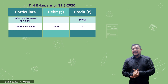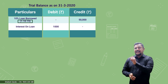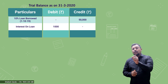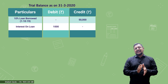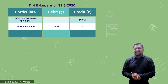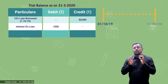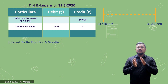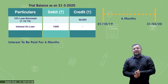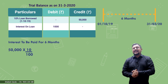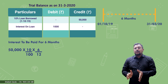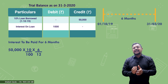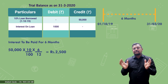The relevance of the date given in the trial balance — 1/10/19 — means the 10 percent loan was borrowed on 1/10/19. So if we calculate the interest, we have to pay for the period from 1/10/19 to 31st March 2020, that is six months. Interest = 50,000 × 10/100 × 6/12, so total interest payable in the current year comes to 2,500.